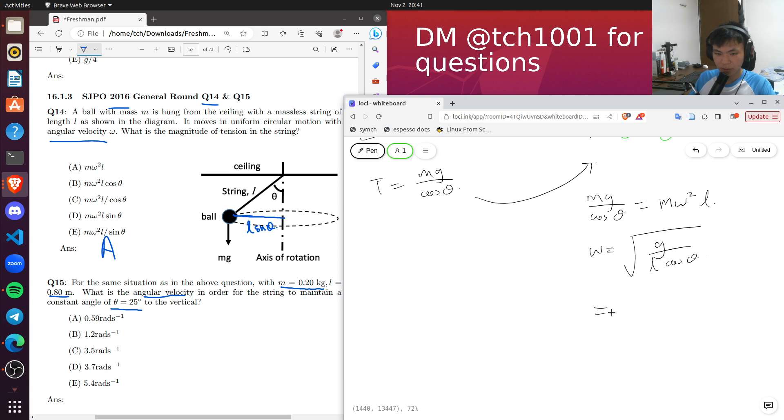And that would give us 3.68 radians per second. Okay, they're asking for 2 significant figures, so that's 3.7 radians per second.